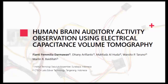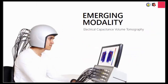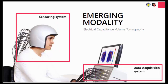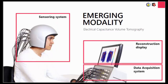I would like to introduce this emerging modality: Electrical Capacitance Volume Tomography, or ECVT. ECVT consists of three main units: the sensing system, the data acquisition system, and the reconstruction display. ECVT can construct a real-time volumetric image of the brain.